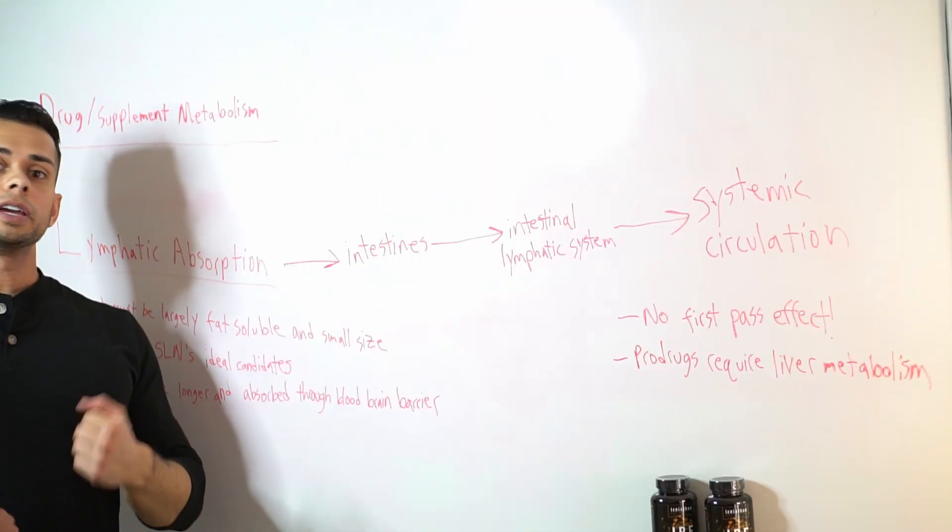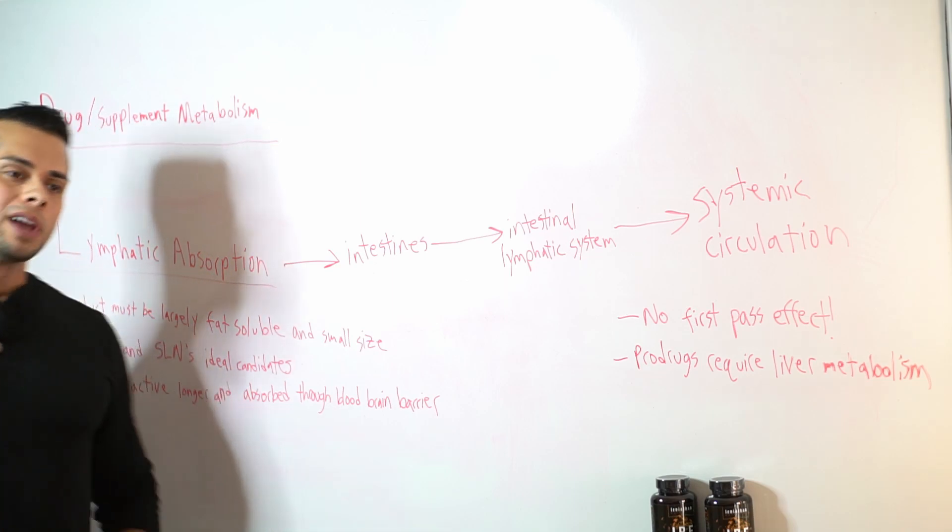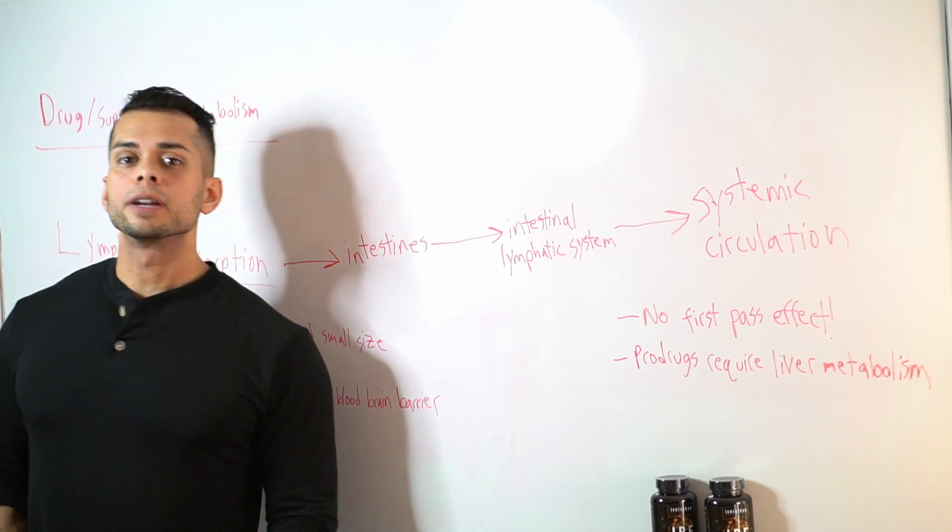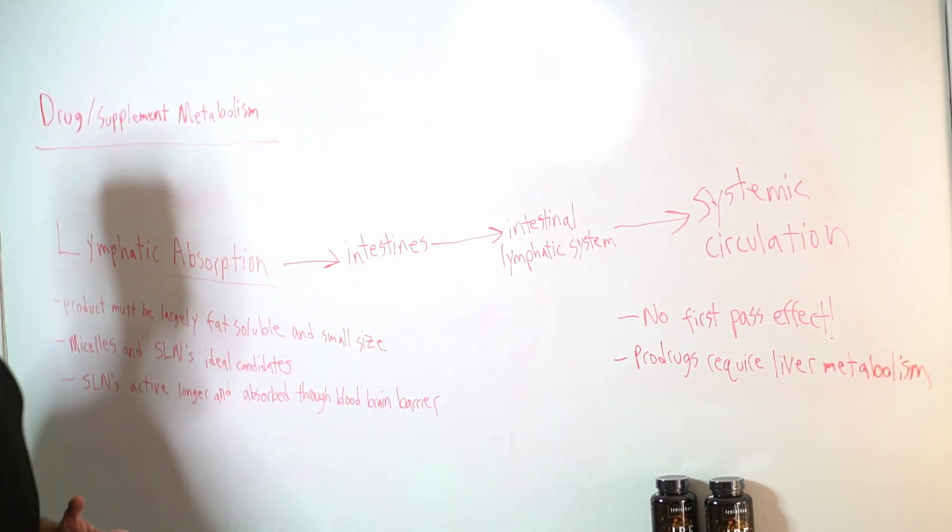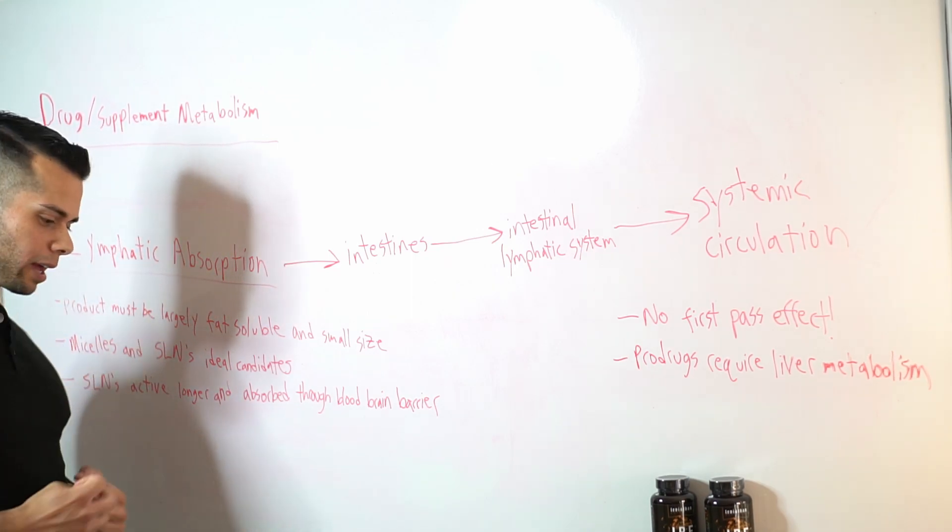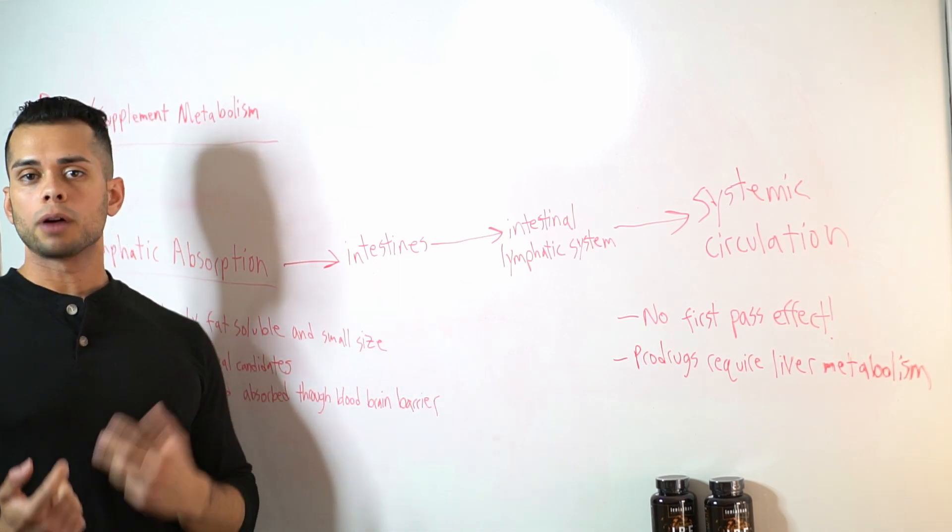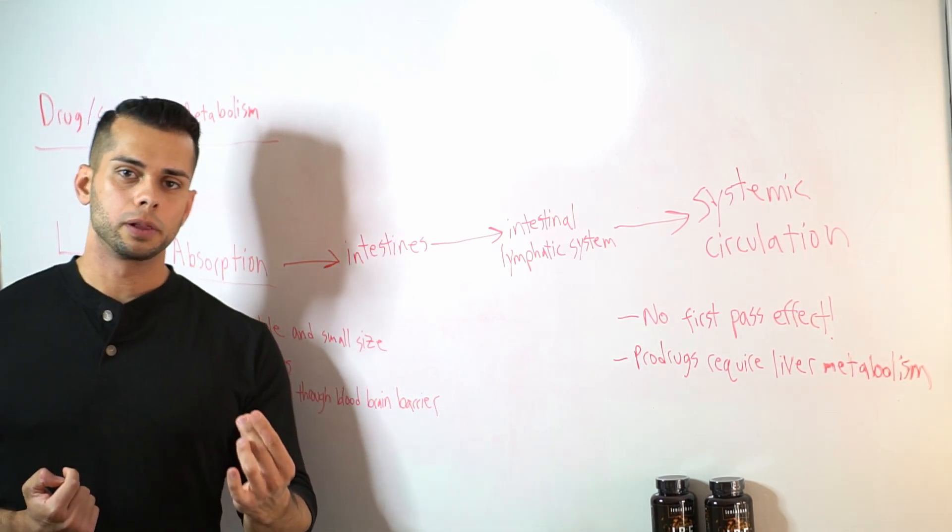So for a drug or supplement to be absorbed through the lymphatic system, there's a certain criteria that must be met. Some of that criteria is that the product must be very fat soluble, and it should also be pretty small in size so that it can be properly absorbed through the lymphatic system.